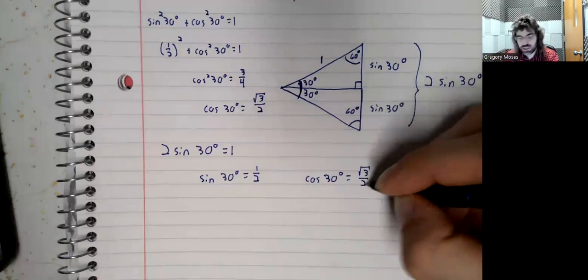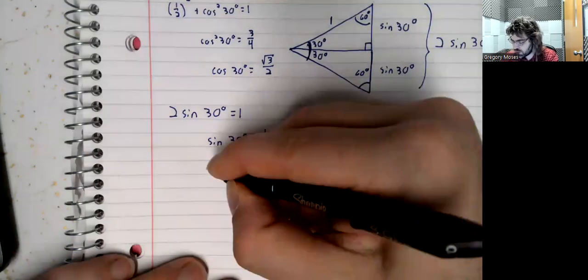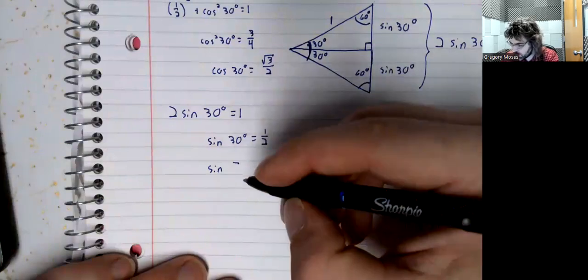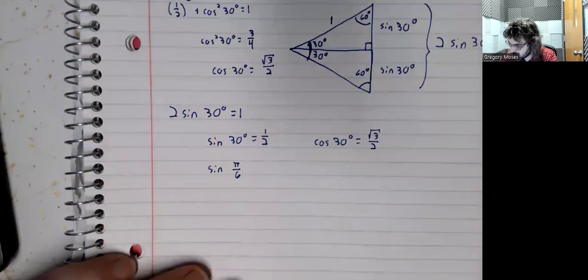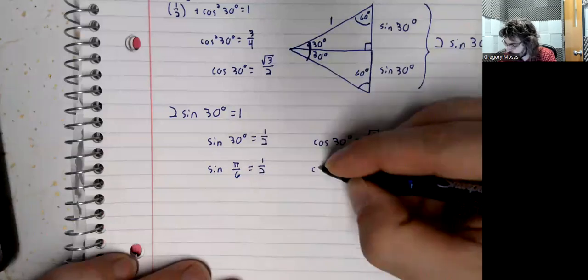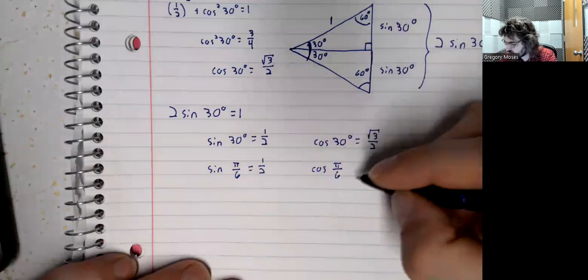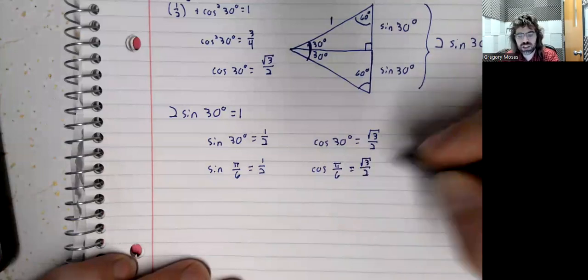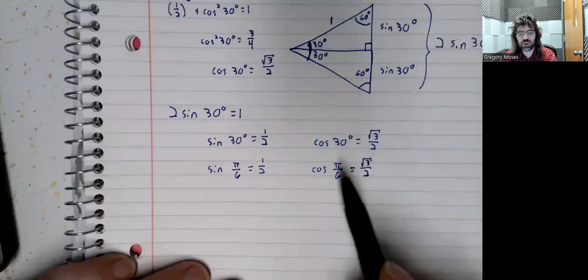And this is degrees. Just as we did with 45 degrees, let's also make this a statement about radians. 30 degrees is pi over 6 radians. I've mentioned this before, but note that degrees are units. Radians are not thought of as units, which is why up here we have to have a unit indicator, this degree symbol, but down here we just write pi over 6.